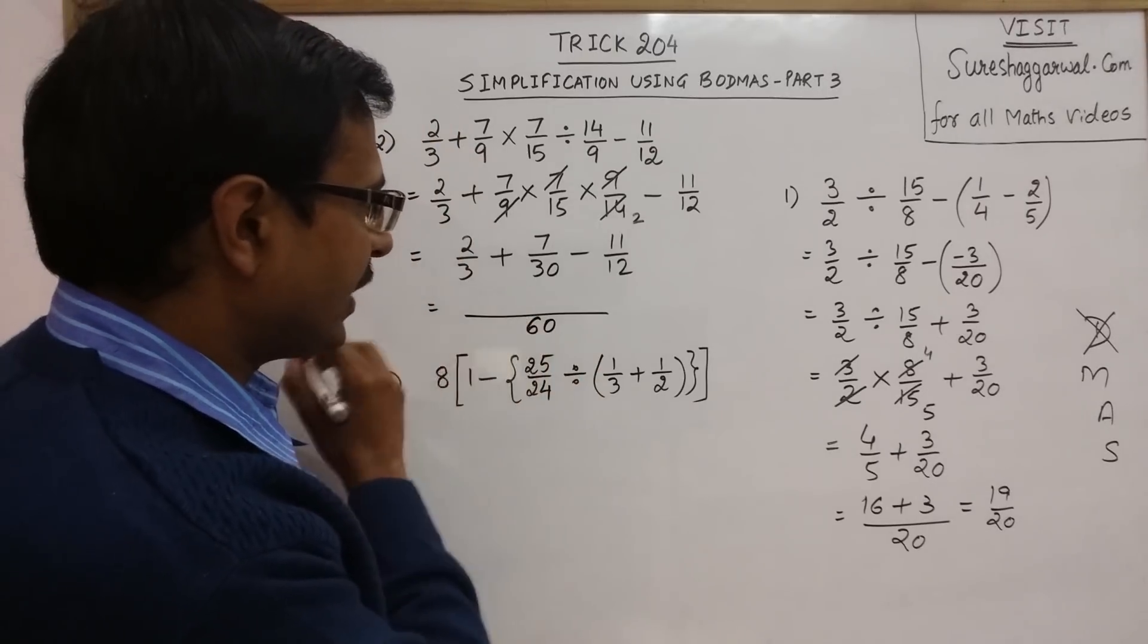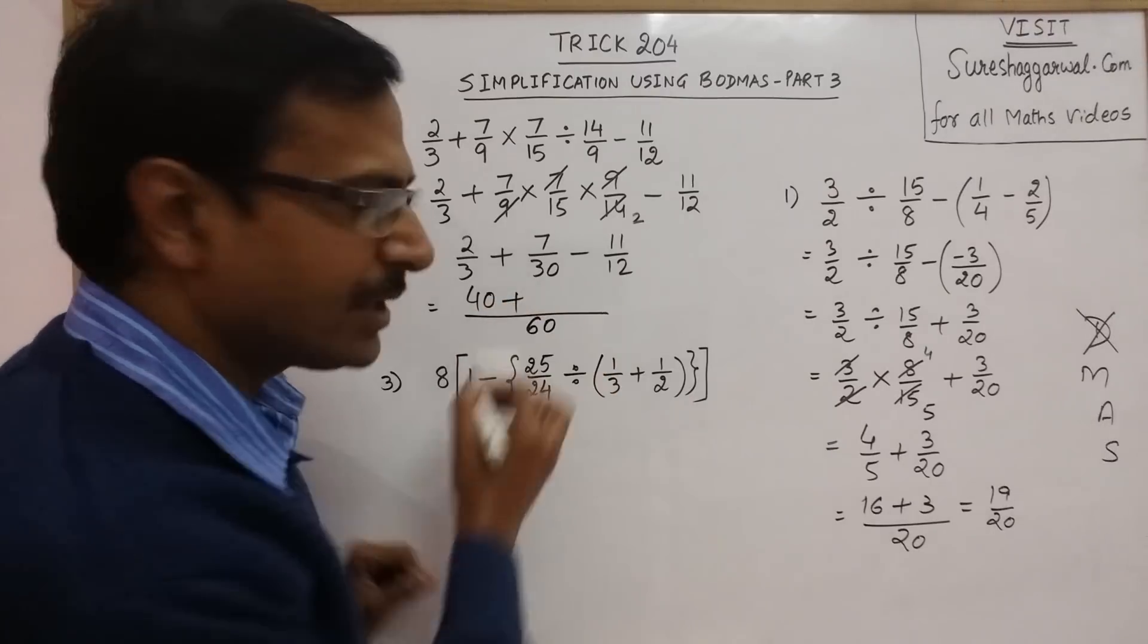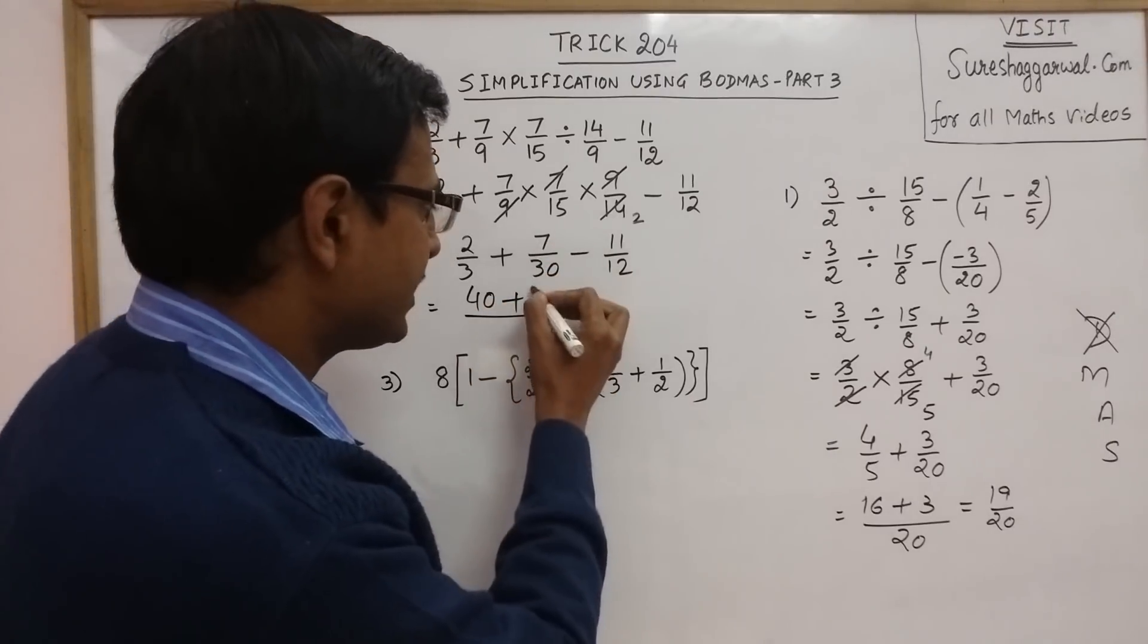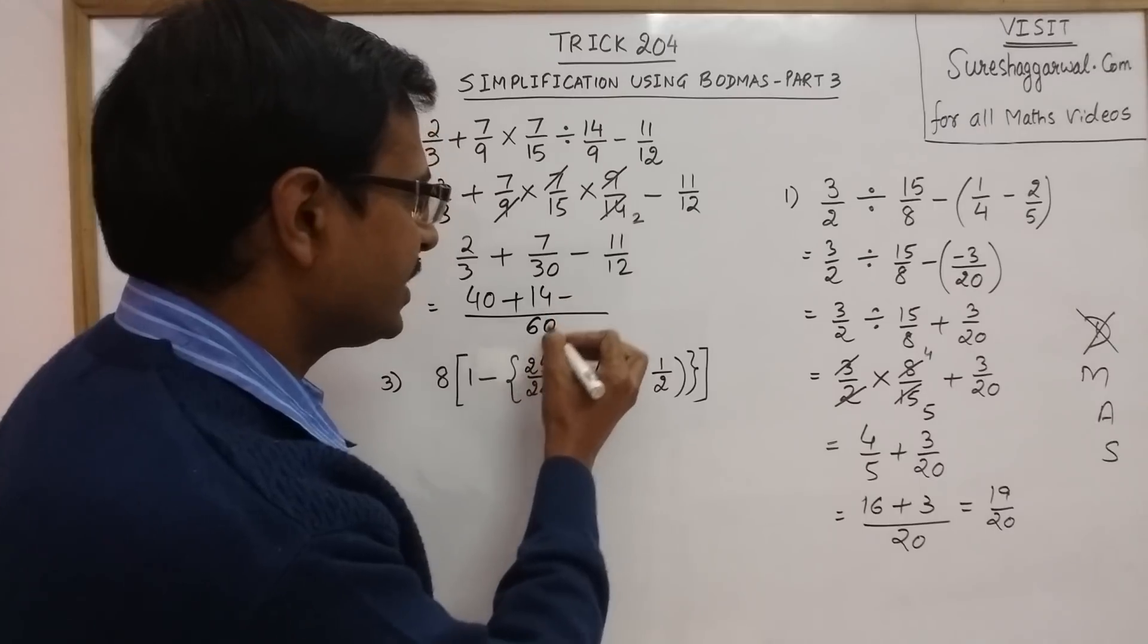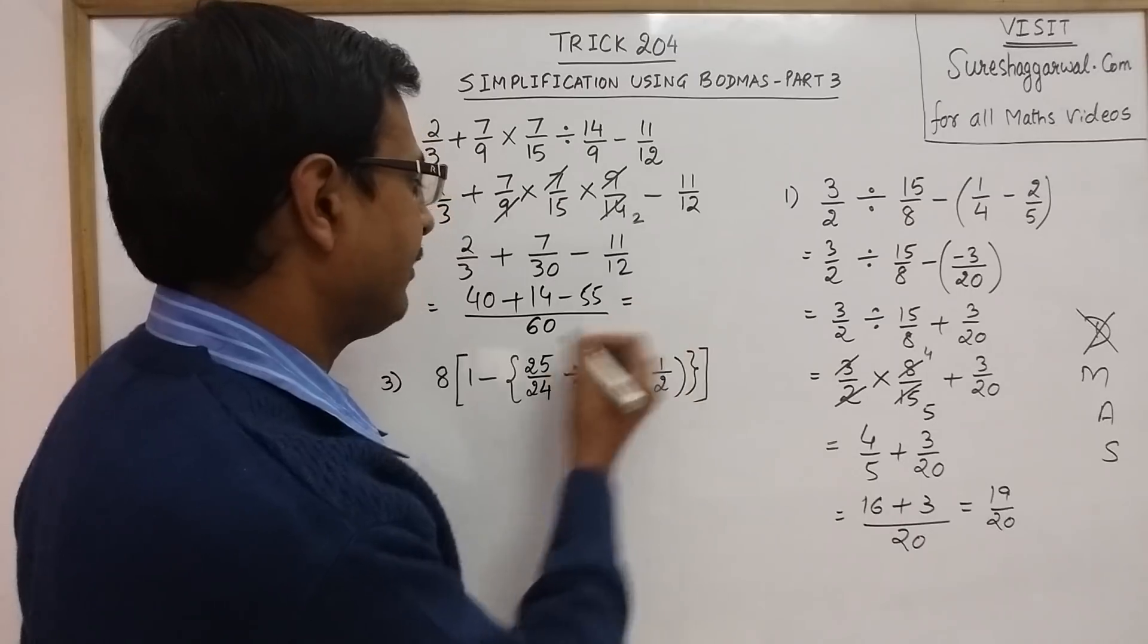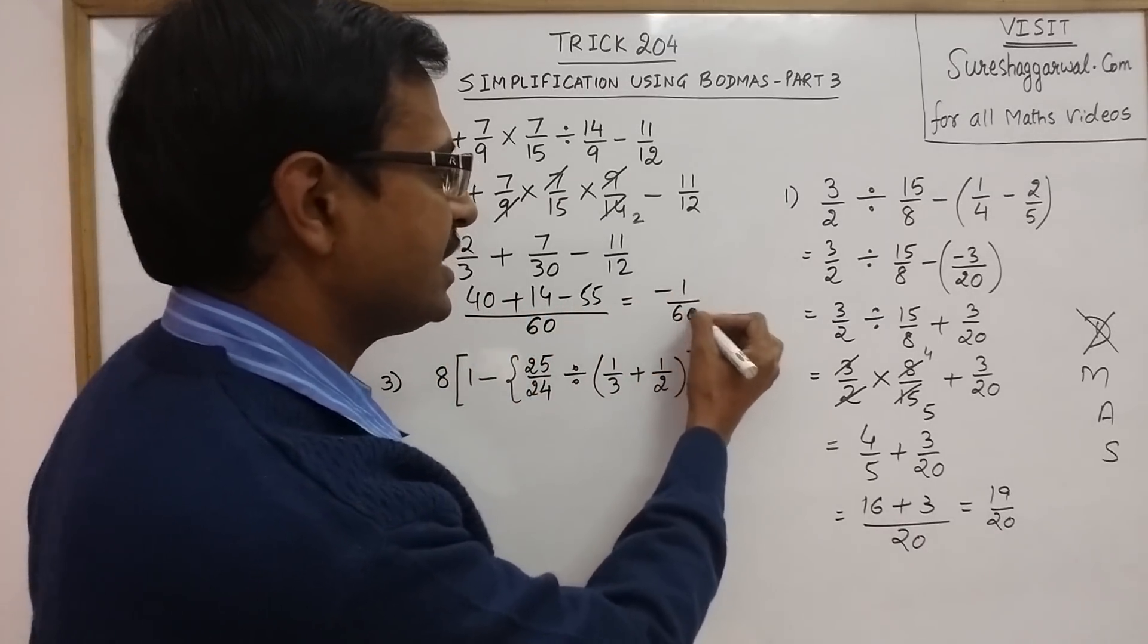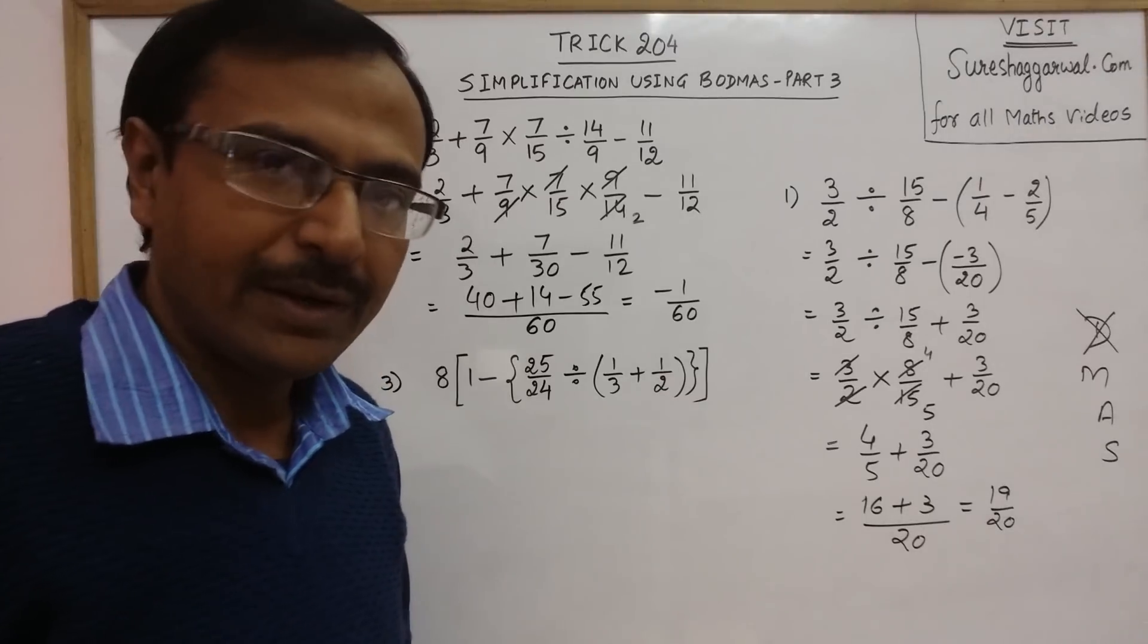Now 60 divided by 3 is 20, 20 into 2 is 40. 60 divided by 30 is 2, 2 into 7 is 14. 60 divided by 12 is 5, 5 into 11 is 55. So you have 54 minus 55, that is minus 1/60, which is the required answer.